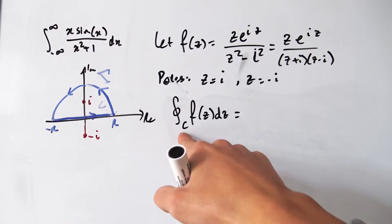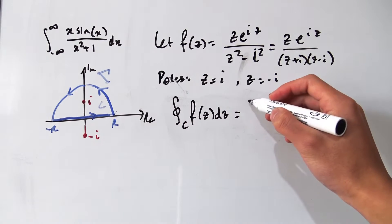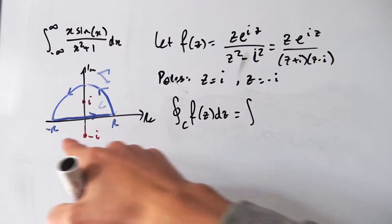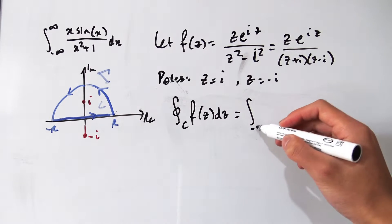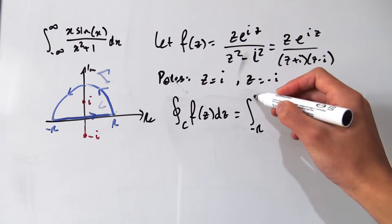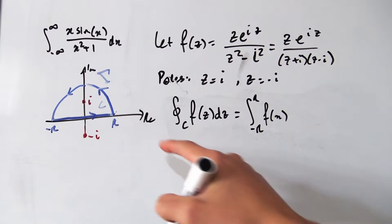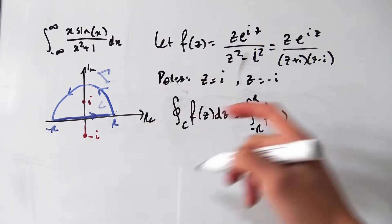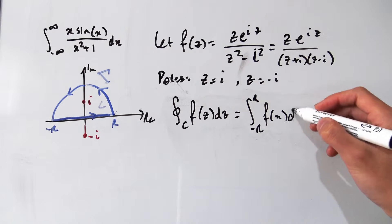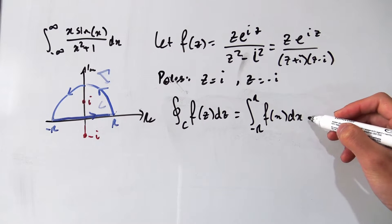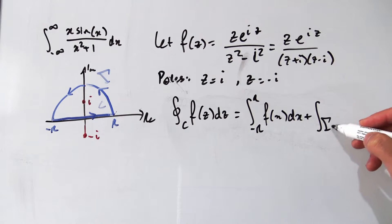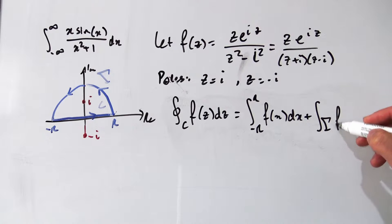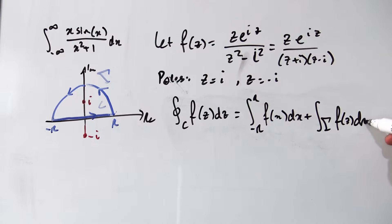We can decompose the contour into its separate paths. First we have the path integral from −R to R of f(x) dx, walking along the real axis with a real variable, and then we add the integral over gamma of f(z) dz.